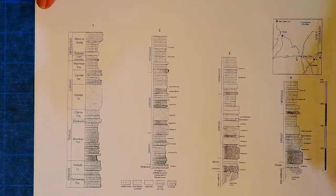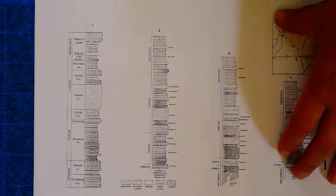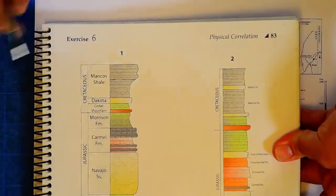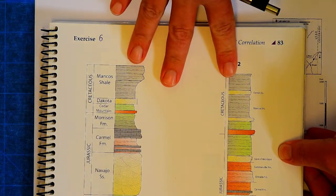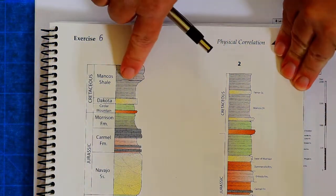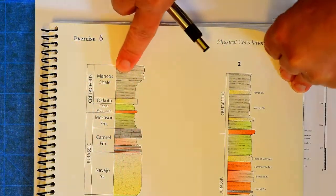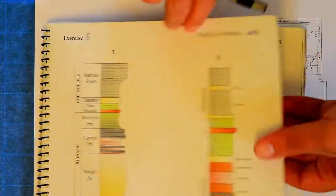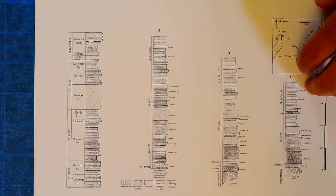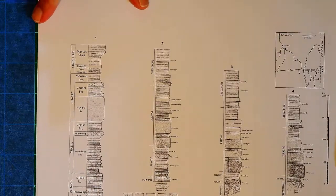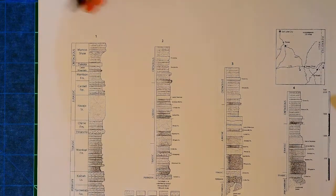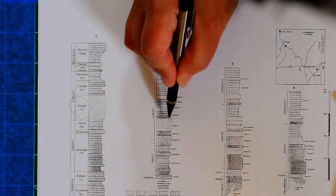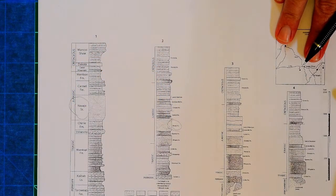Now that looks like this. I know this might be a little bit difficult to read, so if you need to, go into your lab manual where it's in color and will be a little easier to read there. But you are going to correlate these. So pay attention to names of formations. For example, we have the Navajo sandstone here and the Navajo sandstone there.